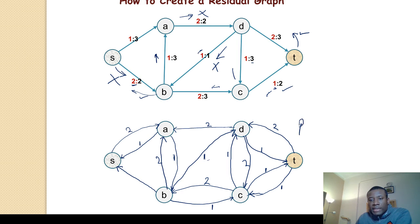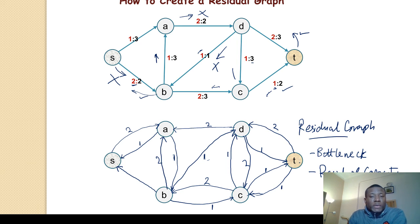This is the residual graph. The next thing we'll do in the next tutorial is analyze this graph using the Ford-Fulkerson algorithm to see the concepts of residual capacity and bottleneck. Those are the two concepts to understand Ford-Fulkerson. We'll do this in the next tutorial. Thank you for viewing. If you have challenges following this, let me know in the comment box and I'll get back to you.